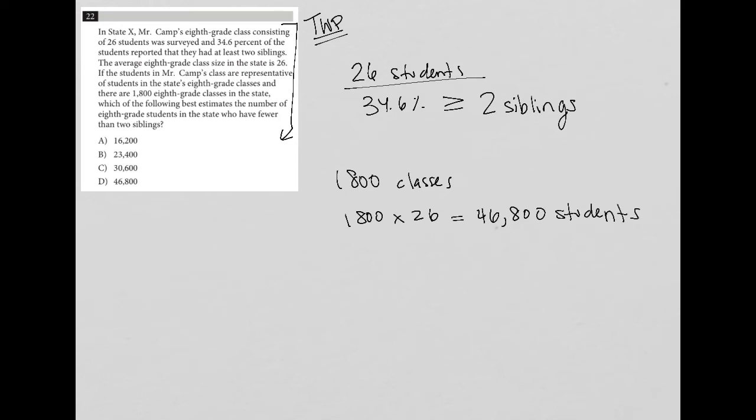And there are 1800 eighth grade classes in the state, which of the following best estimates the number of eighth grade students in the state who have fewer than two siblings? Perfect. So this percentage tells us those number of students who have greater than or equal to two siblings.